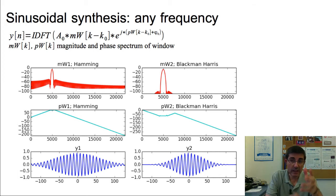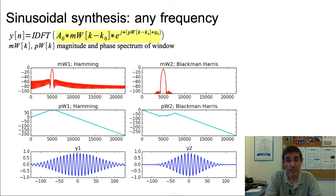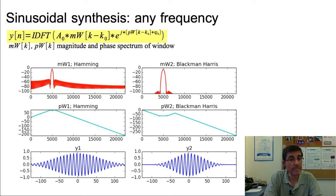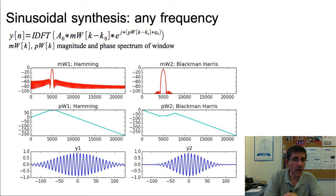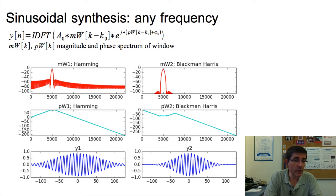We also know how to represent sinusoids with frequencies different from the discrete DFT frequencies. Such a sinusoid does not have a single spectral value — it has values for all frequencies, depending on the window considered. To generate a sinusoid in the frequency domain we have to generate the transform of a window and place it at the right frequency, amplitude, and phase. The magnitude spectrum of the sinusoid is the magnitude spectrum of the window shifted to the right frequency and multiplied by the right amplitude, and similarly for the phase spectrum. Plots show two examples with two different windows, each yielding different magnitude and phase spectra, and taking their inverse gives windowed sinusoids.